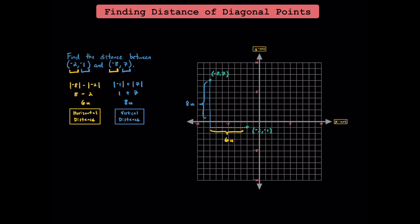That's how you find the horizontal and vertical distance without using a coordinate plane. You may be wondering what this has to do with finding the distance between the original two points. Let's call the distance between our two diagonal points C. It turns out that when you square the horizontal distance, then square the vertical distance, and add those two together, you'll always get the diagonal distance squared.